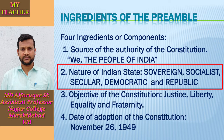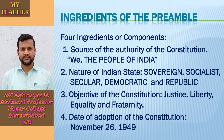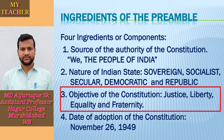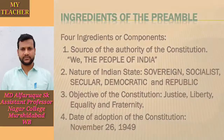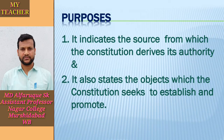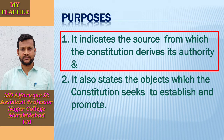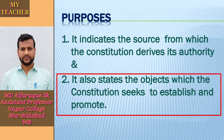Secondly, the nature of the Indian state — it declares India to be a sovereign, socialist, secular, democratic and republican polity. Thirdly, the objectives of the Constitution: it specifies justice, liberty, equality and fraternity as the objectives. And lastly, the date of adoption of the Constitution — it stipulates November 26, 1949 as the date. The Preamble serves two purposes: it indicates the source from which the Constitution derives its authority, and it also states the objects which the Constitution seeks to establish and promote.